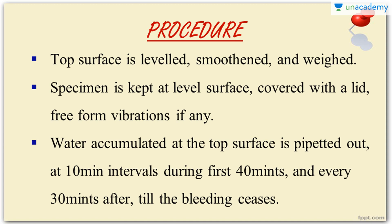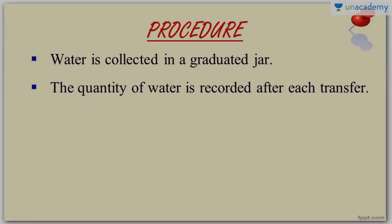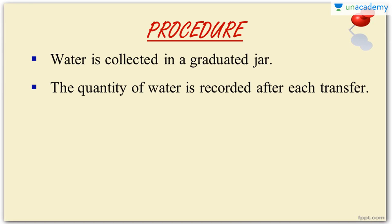Wait for some time. Water will accumulate at the top surface and this water is pipetted out using a pipette. This is done at each 10-minute interval for the first 40 minutes. After the 40-minute window is over, pipetting is done every 30 minutes, continuing until the bleeding ceases — that means until the bleeding stops. The pipetted water is collected in a graduated jar and the quantity of water is measured and recorded for each interval.